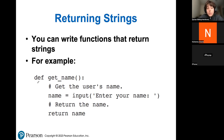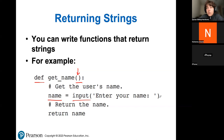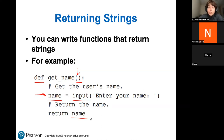Here is an example of returning a string. We're defining a function called 'get_name' and it doesn't take any arguments — you can see by the empty parentheses. Then we have a colon specifying the end of the function header. We get the user's input: we have a variable called 'name', and then we get the input with the keyword 'input' — asking the user to enter their name. After they enter it, the name is stored in the variable 'name', and then we return whatever the user entered. So we're returning a string — the user's name.